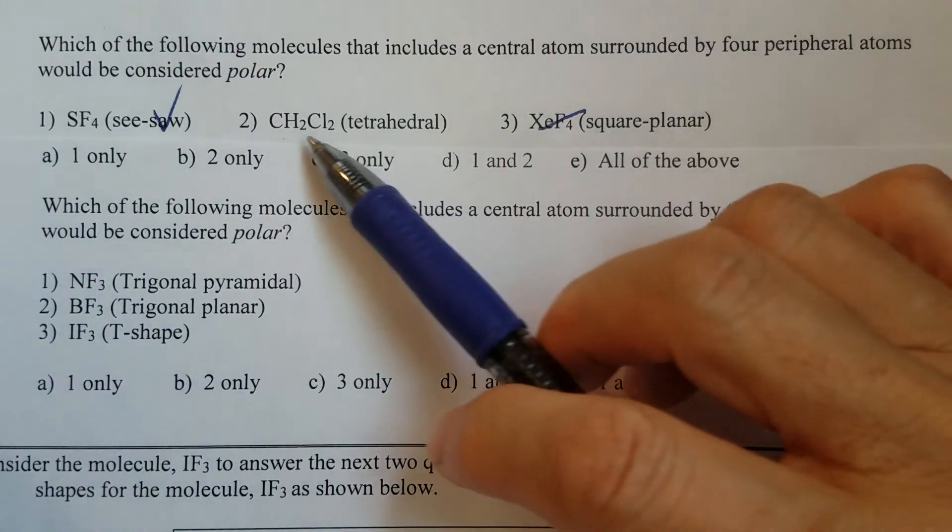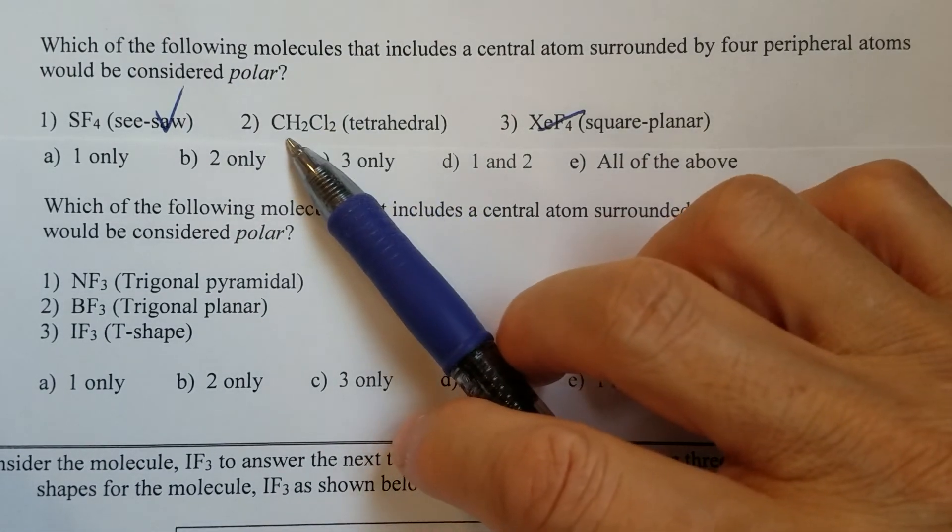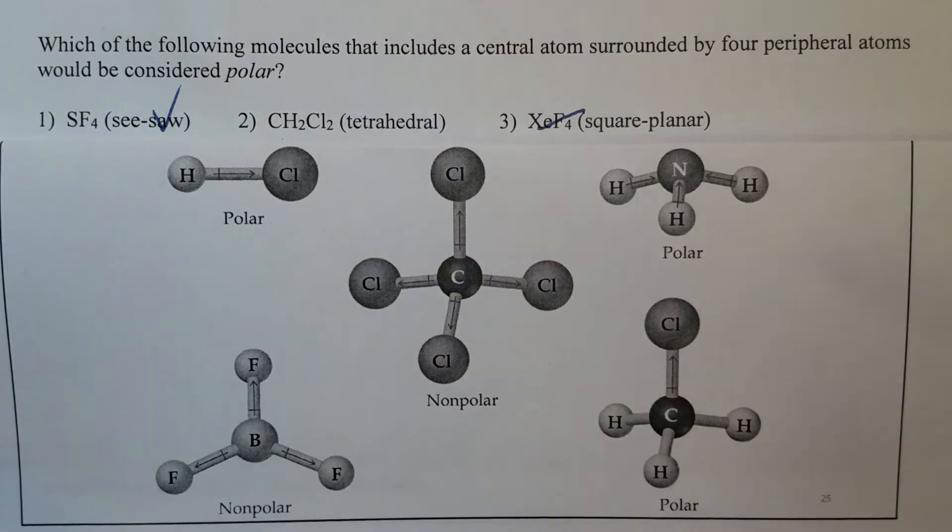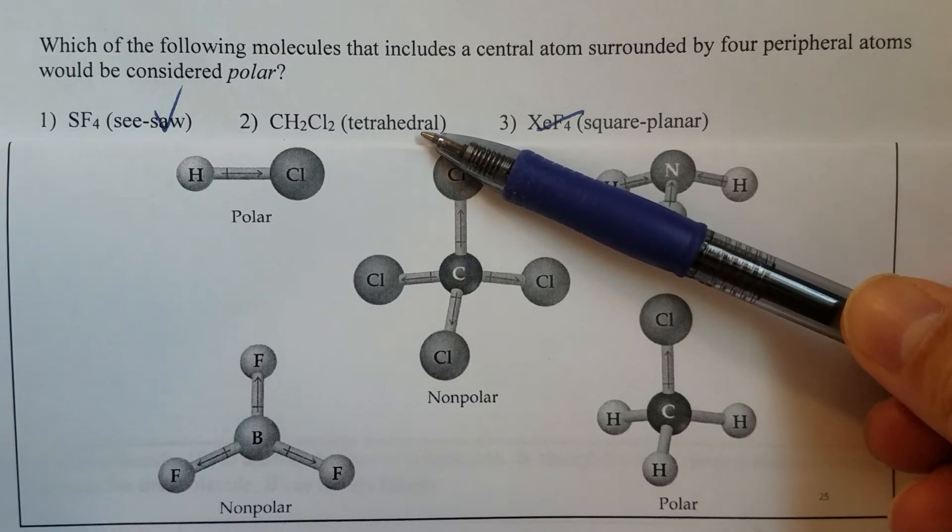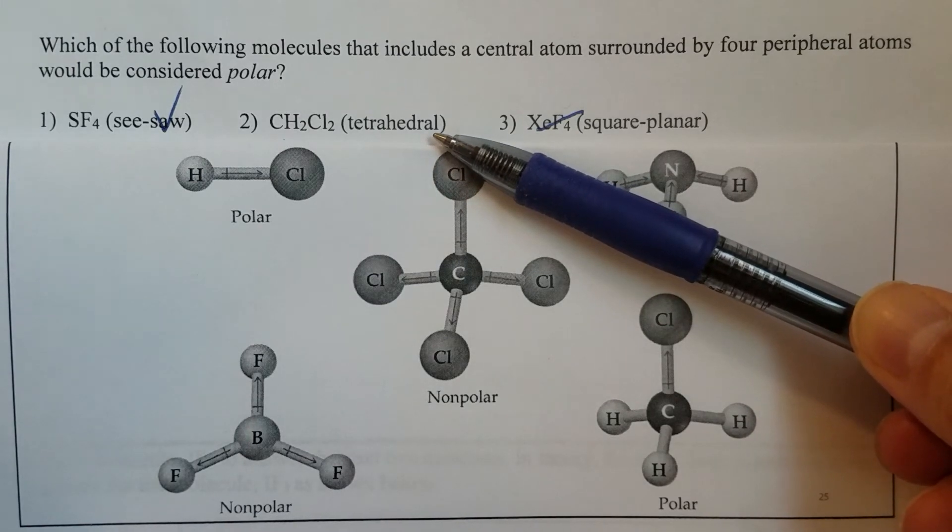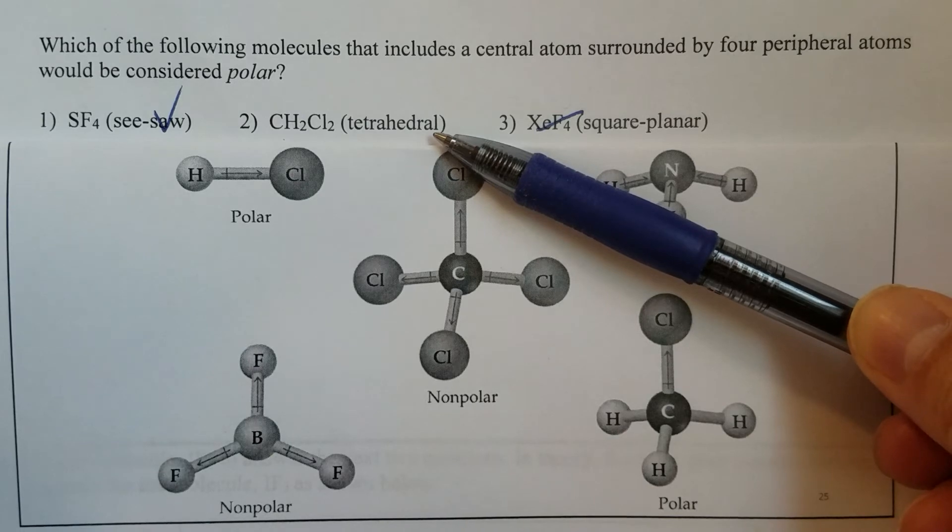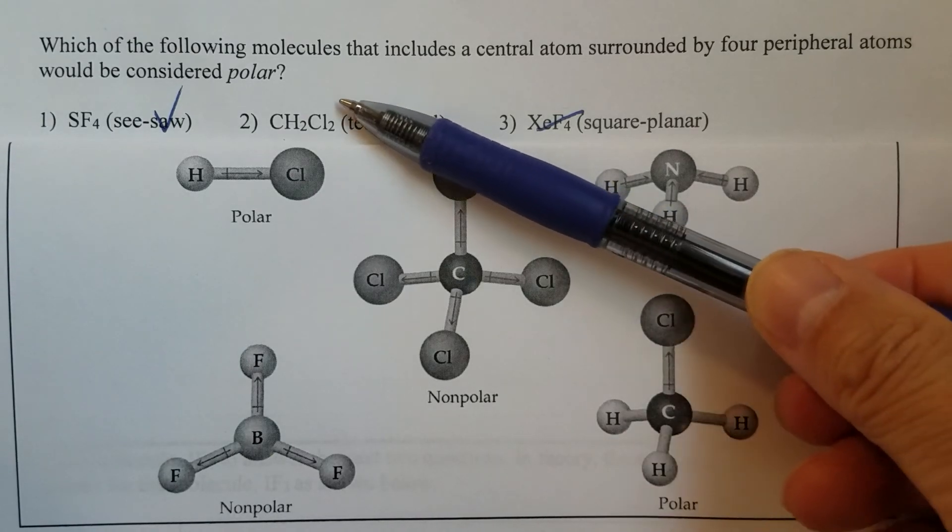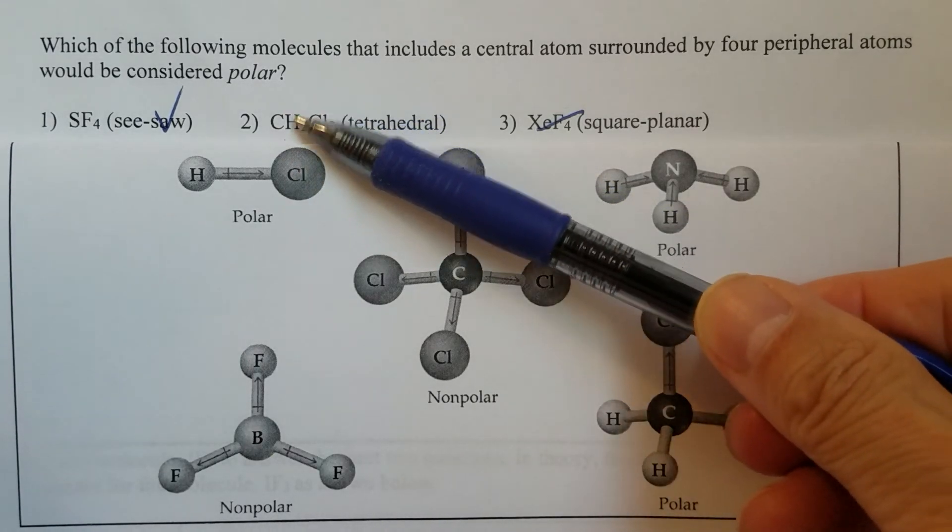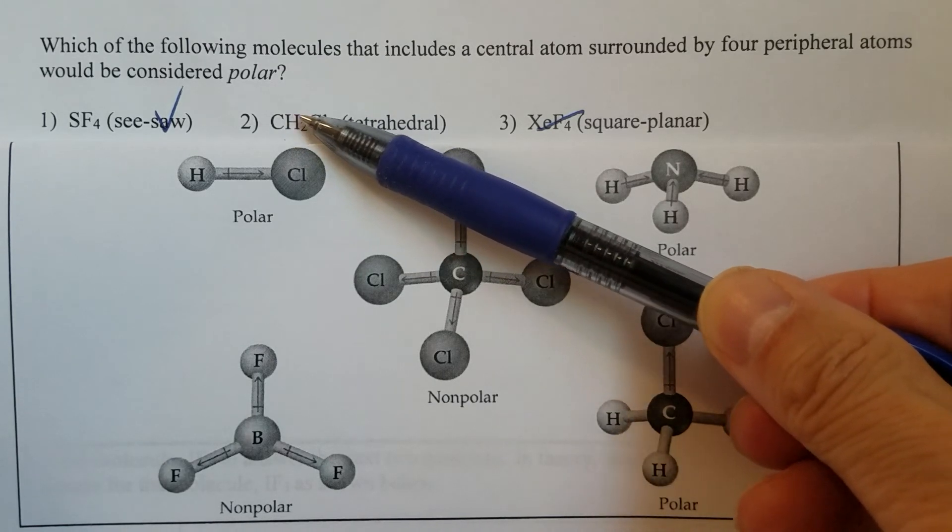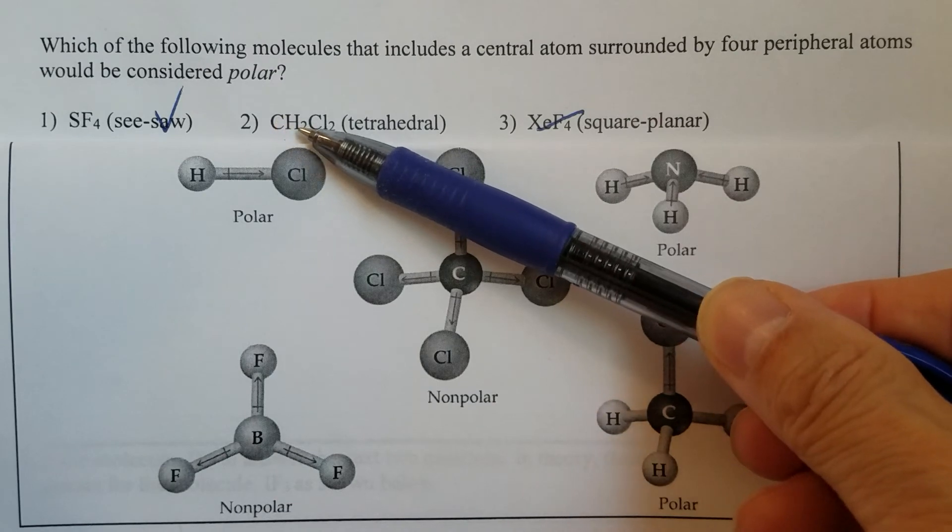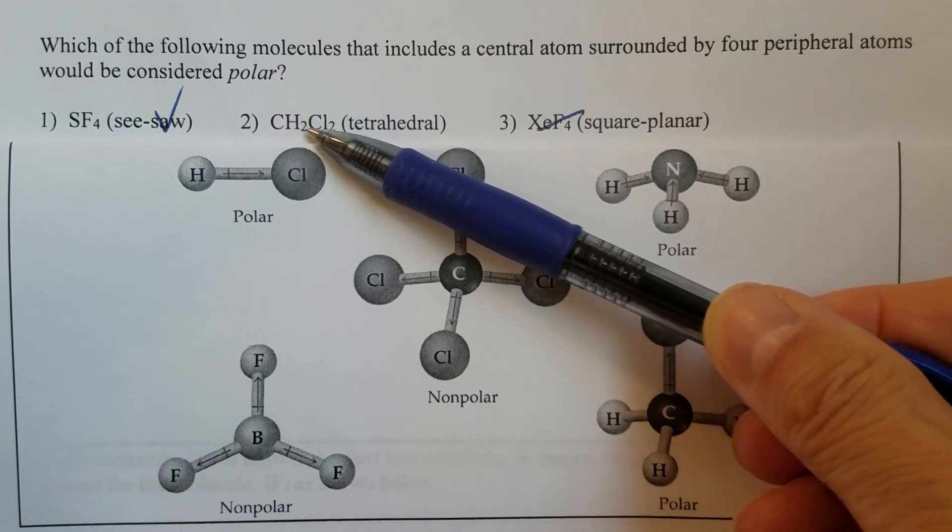Now let's take a look at the second molecule. We are told that the molecular geometry is tetrahedral and that is a symmetrical geometry. So if all four peripheral atoms are identical, then number two is non-polar. However, they are not identical.